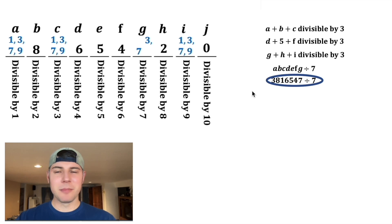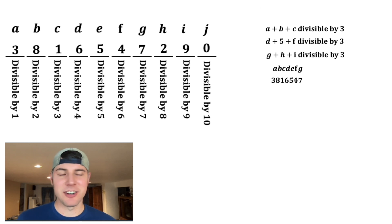Let's clear this, bring this up. So we now know for a fact A must be 3, C must be 1, and G must be 7. And the only digit not being used is 9, and this is the answer. 3, 8, 1, 6, 5, 4, 7, 2, 9, 0. How exciting.